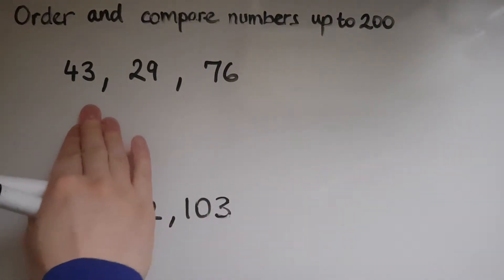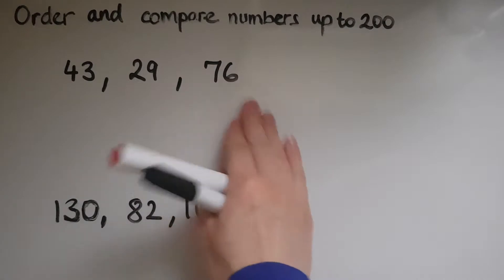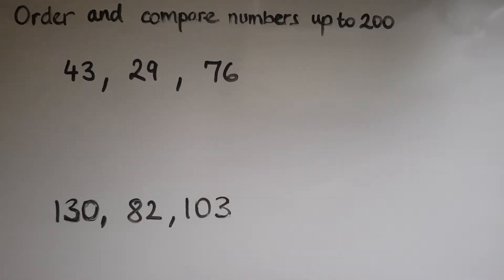I've got 43, 29, 76. I'll order these numbers starting with the lowest, the smallest.